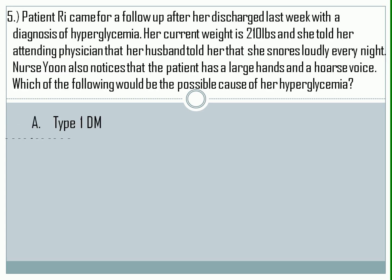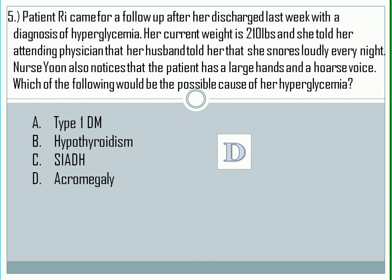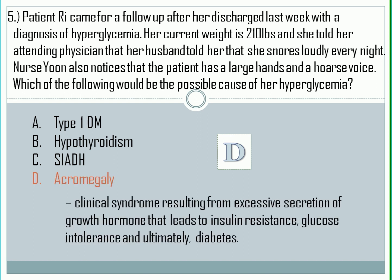Question number 5. The correct answer is Letter D. Based from the given manifestations, the hyperglycemia of the patient was caused by acromegaly. Acromegaly is a clinical syndrome resulting from excessive secretion of growth hormone that leads to insulin resistance, glucose intolerance, and ultimately, diabetes. If you want to know more about diabetes mellitus, you can check this link.